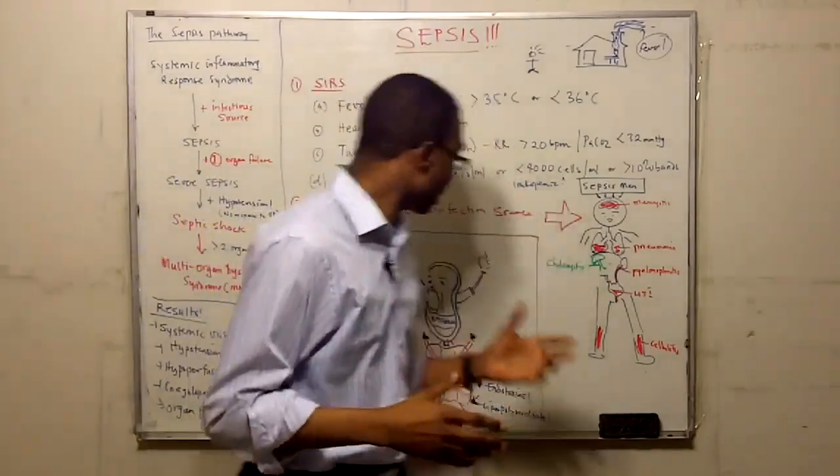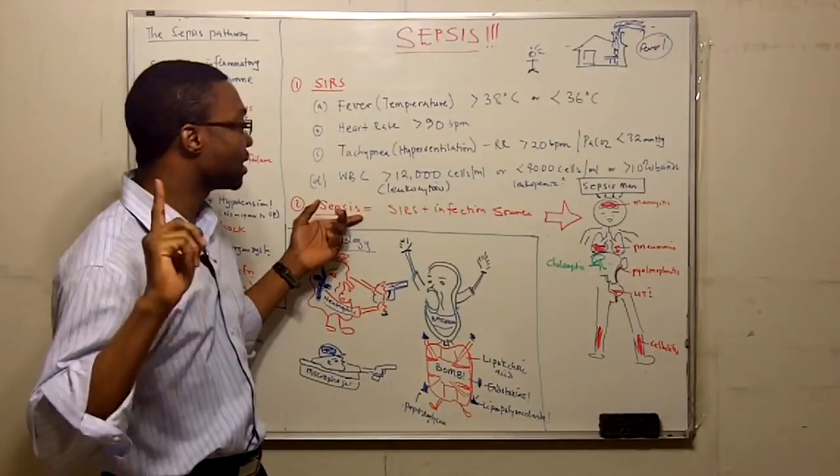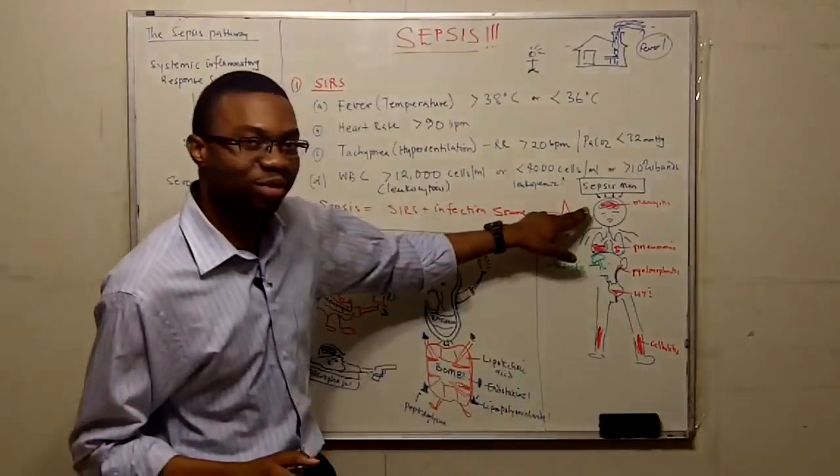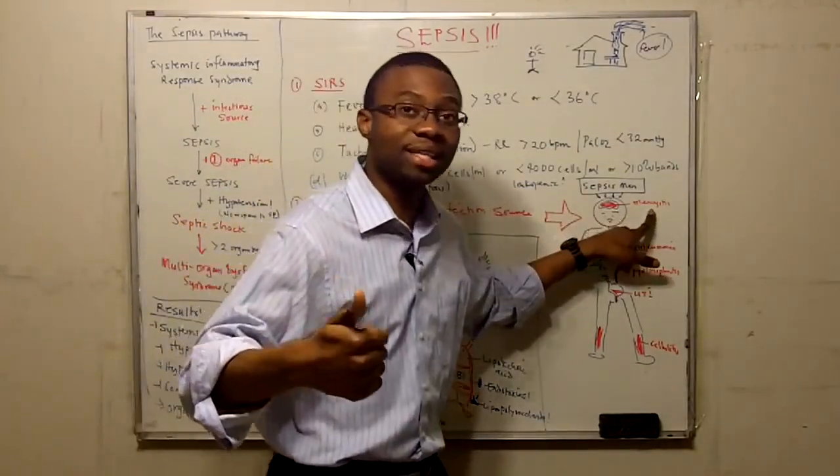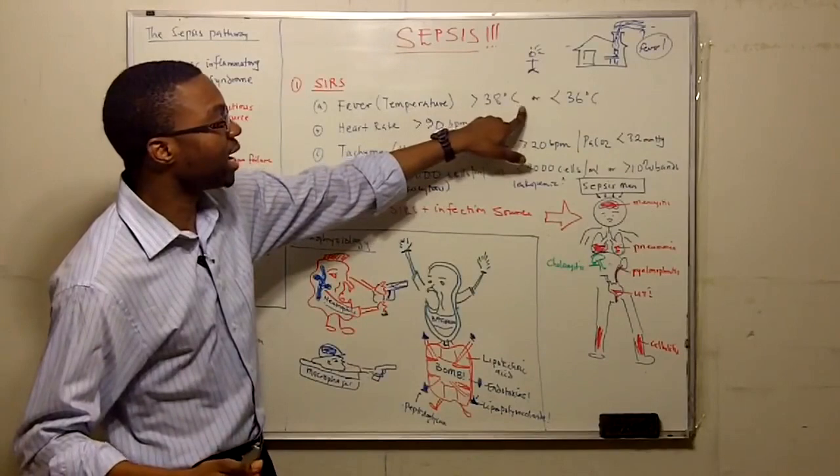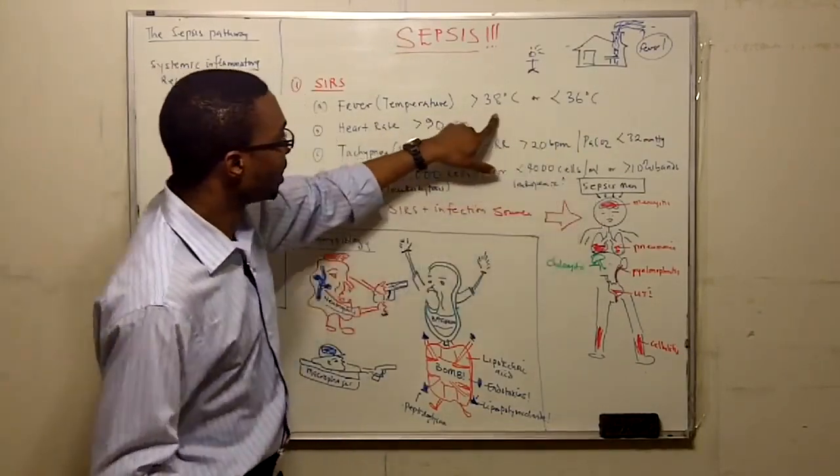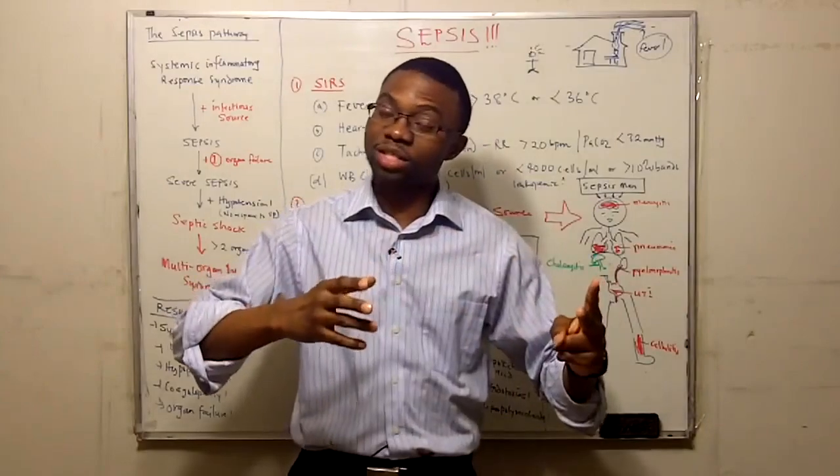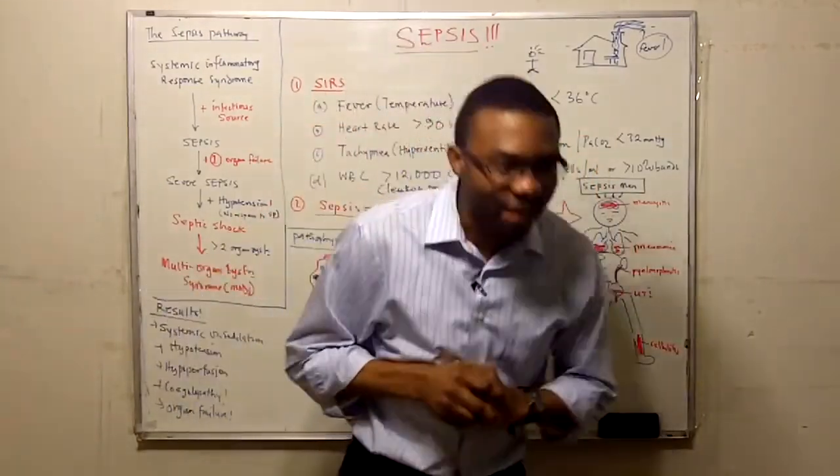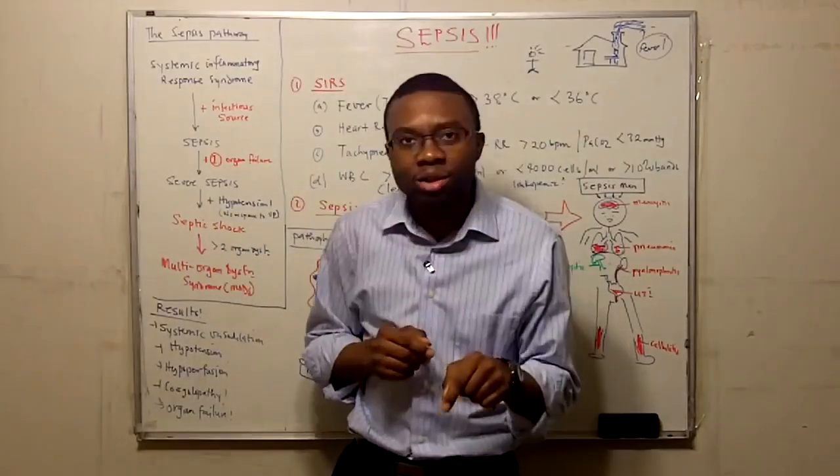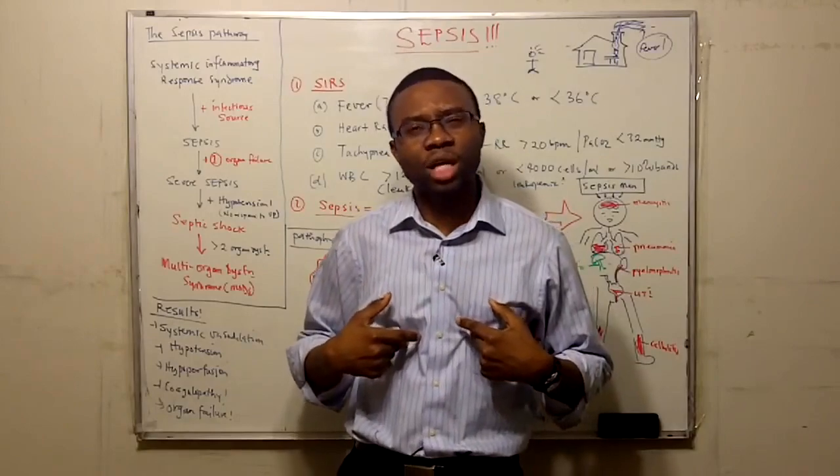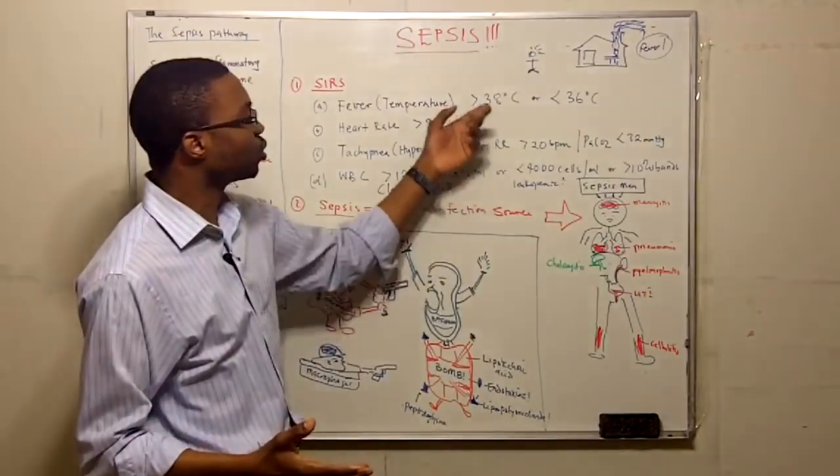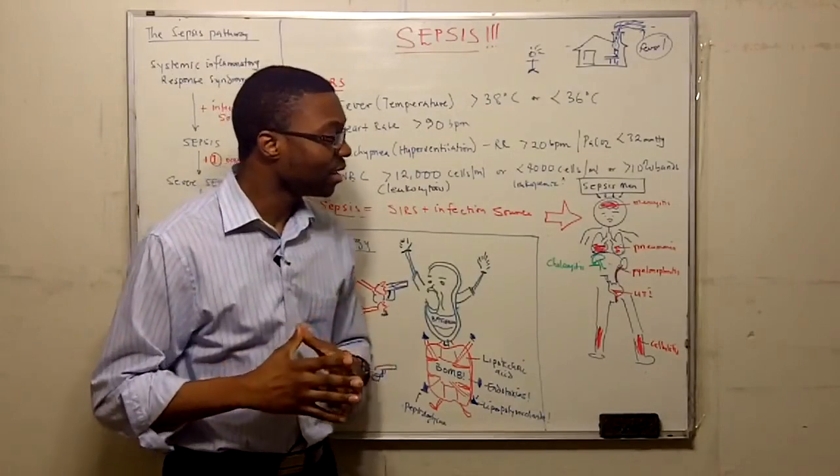When does the patient become septic? When the patient develops sepsis, they meet two of this criteria and then we know where the infection is. Remember my story. If the patient has meningitis and they have temperature of 38 and the heart rate is 90, or temperature of 38 and the white count is high, guess what? Now they have sepsis. It's two of the systemic inflammatory response plus we found the infection source. Pneumonia plus one or two of this, sepsis.